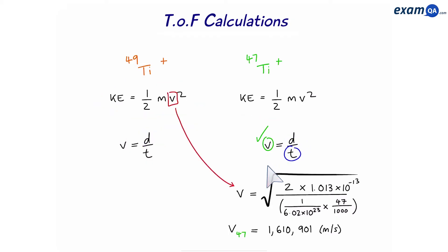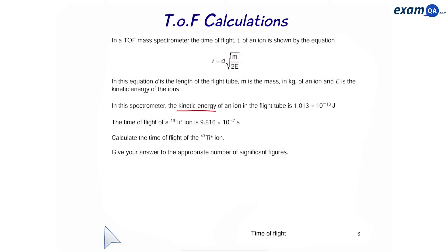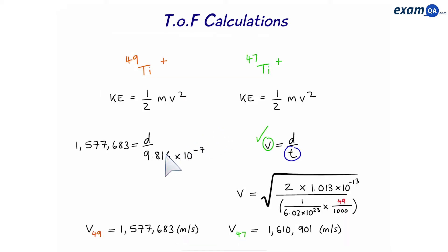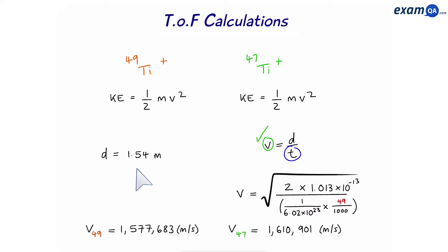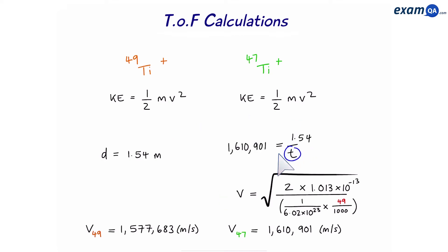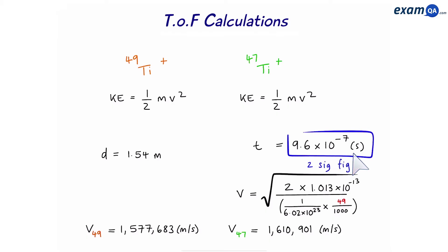We work out the velocity of Ti-49 using the same approach, changing the Mr from 47 to 49. That gives us a velocity for Ti-49. With the time of Ti-49 from the question, we rearrange distance equals velocity times time, giving us a distance of 1.54 meters — that's how long the flight tube is. We plug that distance and the velocity of Ti-47 into the equation, make T the subject, and get the time of flight for titanium-47, rounded to 2 significant figures.